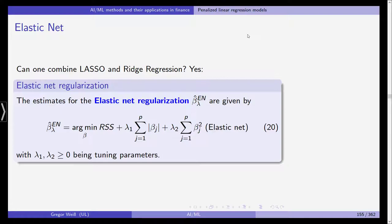The elastic net is quite simple: you take the RSS, the residual sum of squares, and then you add the penalty terms from both the lasso and the ridge regression. These are the sum of the absolute parameter coefficients with tuning parameter λ₁, and the sum of the squared coefficients with tuning parameter λ₂ — both added to the residual sum of squares.